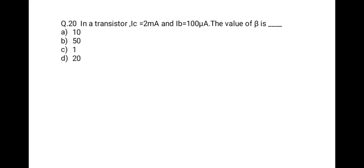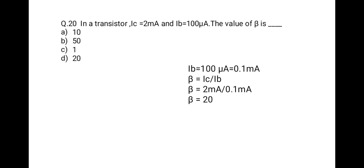The last question: in a transistor, IC = 2 mA and IB = 100 μA; find the value of beta. Beta = IC / IB = 2 mA / 100 μA. Converting 100 μA to 0.1 mA, beta = 2 / 0.1 = 20. So the correct option is 20.